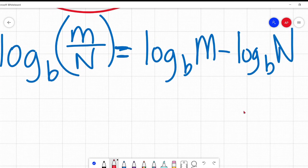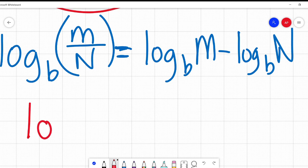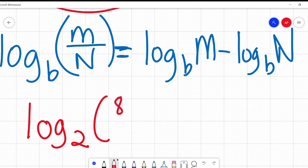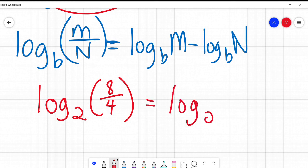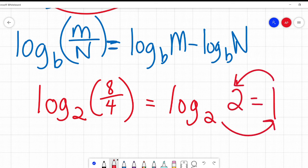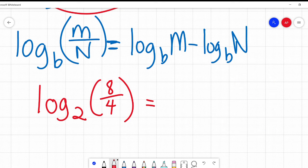To show a real world example of that, we'll say log base 2 of 8 divided by 4. That on its own, we could do several different ways. I could say 8 divided by 4 is 2. Log base 2 of 2 is 1. 2 to the power of 1 is 2. So I know right off, my answer is going to be 1.